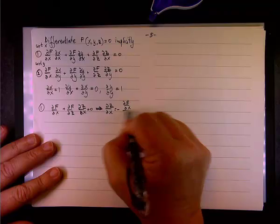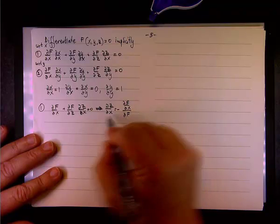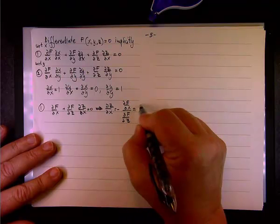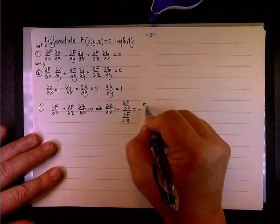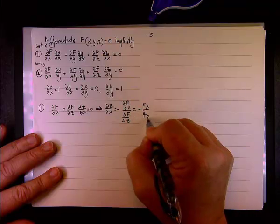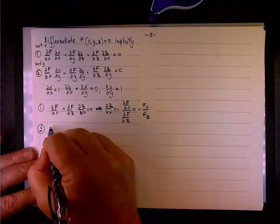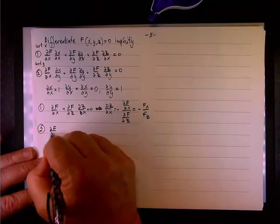So, ∂z/∂x equals negative ∂f/∂x, divided by ∂f/∂z, or we can write it as negative f_x, divided by f_z, no surprise over there.